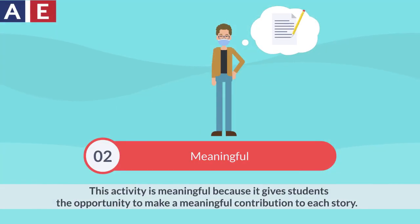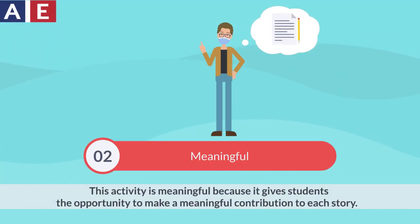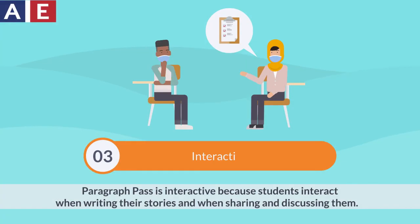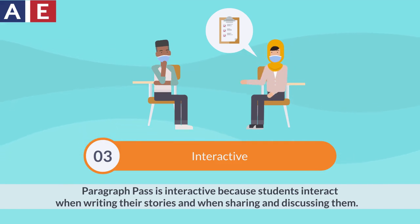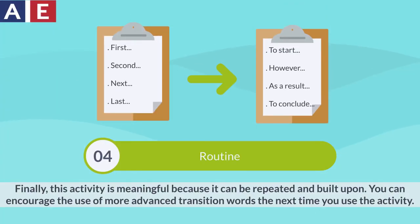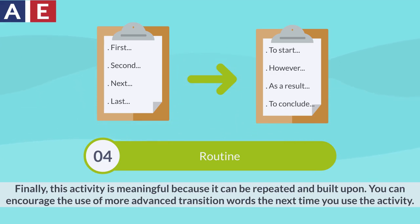This activity is meaningful because it gives students the opportunity to make a meaningful contribution to each story. Paragraph Pass is interactive because students interact when writing their stories and when sharing and discussing them. Finally, this activity is routine because it can be repeated and built upon. You can encourage the use of more advanced transition words the next time you use the activity.